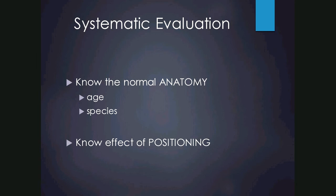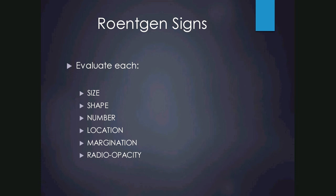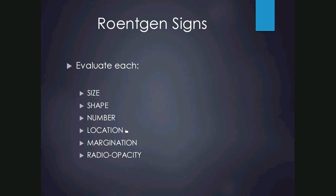The Roentgen signs are a very important concept — they are descriptors used to describe findings on the radiograph. For each lesion we describe: the size in centimetres or millimetres; the shape — whether it's round, square, or fusiform; the number — single or multiple lesions; the location — as specific as possible, e.g. metaphysis, diaphysis, or which lung lobe; margination — whether the edges are smooth or irregular; and the radiopacity — the shade of greyscale that tells you what the structure is made of, with five radiopacities to be discussed.